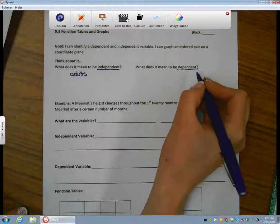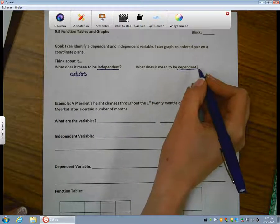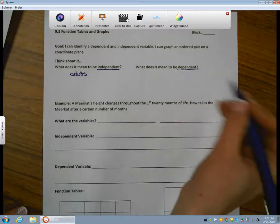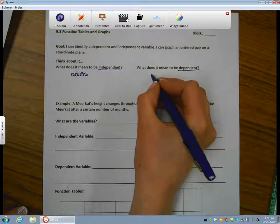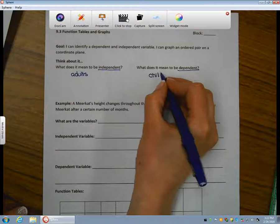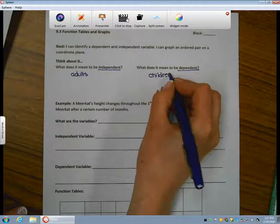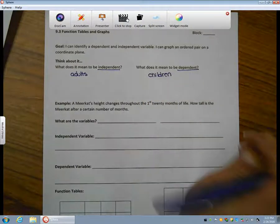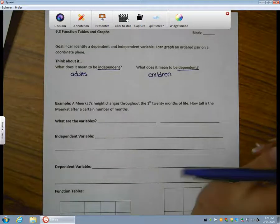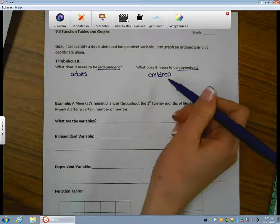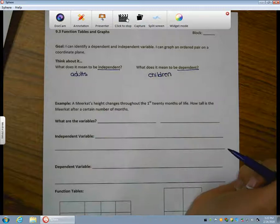Then what would it mean to be dependent? Well, someone who's dependent would rely on others. Children are dependent. Children depend on adults for rides places, food, clothing, shelter. So children are dependent on the adults who are independent.